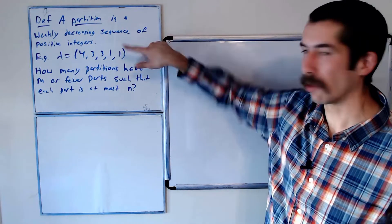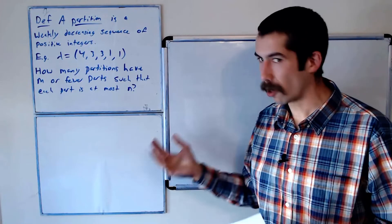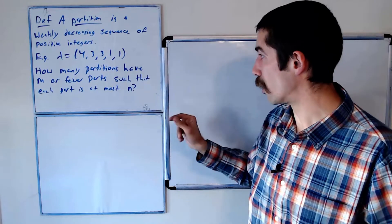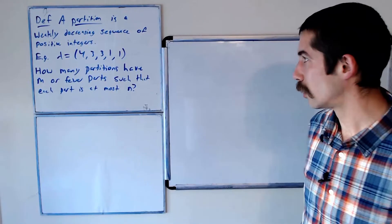Just to clarify, this is a partition with 5 parts where each part is at most 4. But it's also a partition that has fewer than 7 parts where each part is at most 10, so it satisfies a number of these conditions.